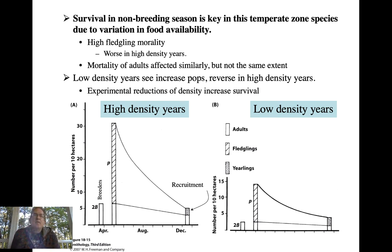In a lot of temperate zone species, winter is the crucial period when you tend to see the most mortality — survivorship in the non-breeding season is often linked to how hard the winter is and what food availability is during that time. Fledglings tend to have the highest mortality in that first winter compared to adults, but adults can also be negatively affected in a really bad year, especially if there's a high density of individuals meaning more competition for limited food.